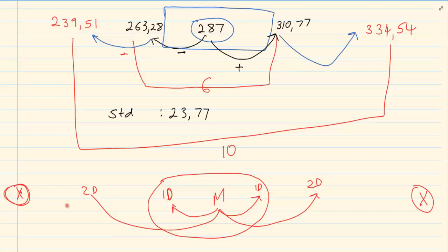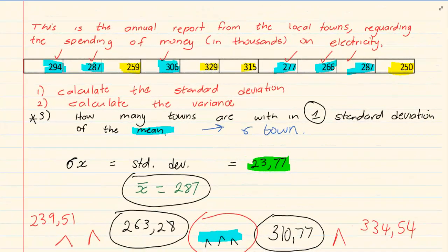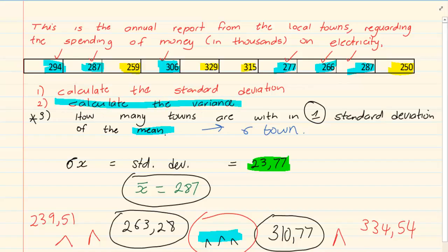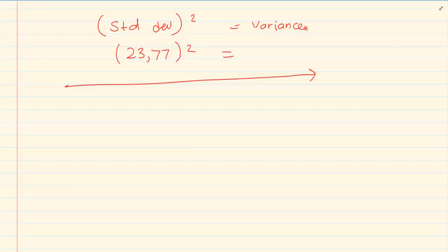Now let us go on. The question that we did not do is calculate the variance. Now variance, variance is standard deviation squared. If you want to calculate the variance, all you have to do is take your standard deviation and square the answer, which will equal to 565,01.